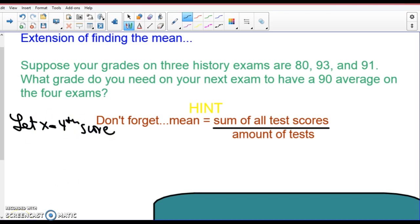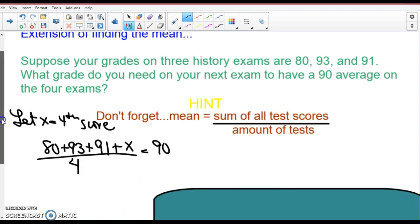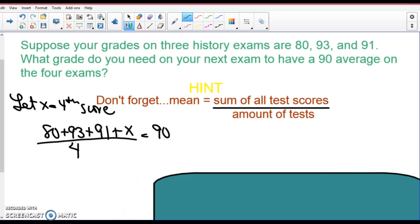So let X equal the fourth score. I'm going to tell you right now, I am going to expect you to be able to set this up on an exam. So our four exams are 80 plus 92 plus 91 plus our fourth one is X - we don't know what that is. But our average, wouldn't I add those all up and divide by four?